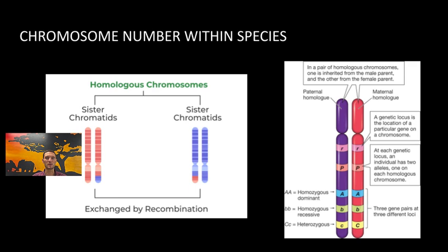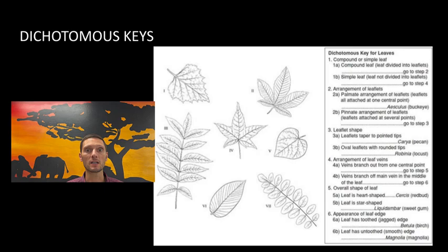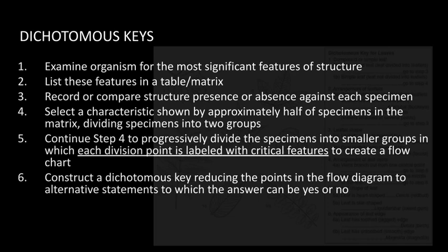For this learning objective, students are expected to produce a dichotomous key for a local plant or animal. If you're not in the class, we recommend spending some time researching how to make a dichotomous key — there are some general steps outlined here. Practice creating one and using one, because you may be expected to do so on the exam.